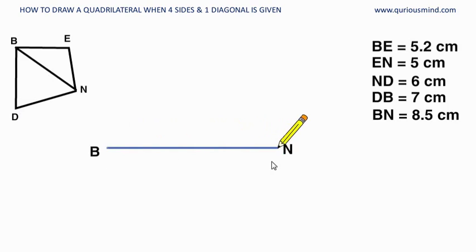So we have drawn diagonal BN of 8.5 cm and now we will focus on drawing triangle BEN which means we need to look for point E and we need distance of E from B and distance of E from N.